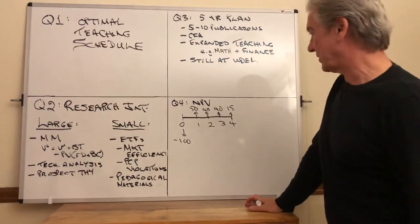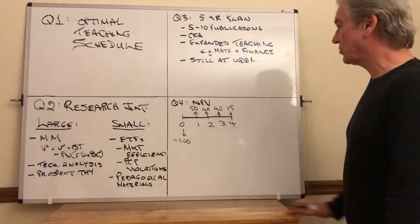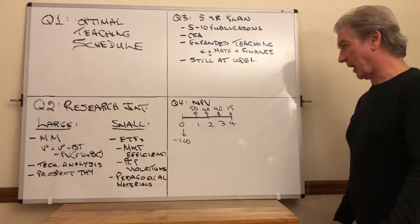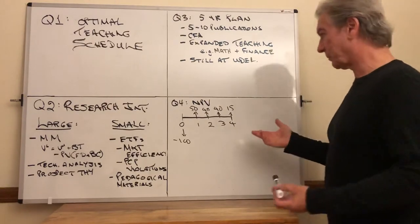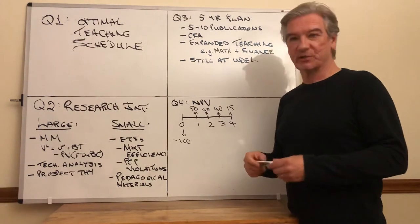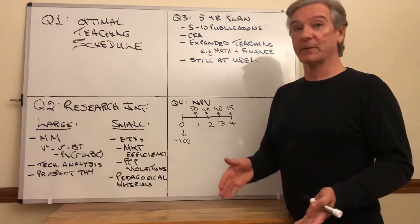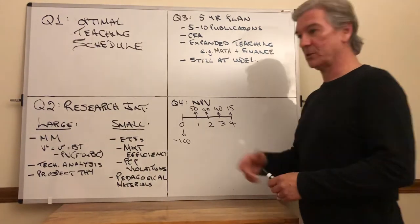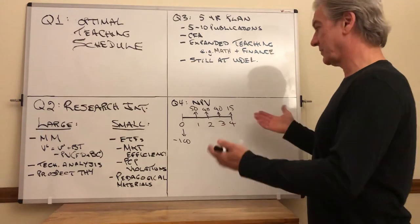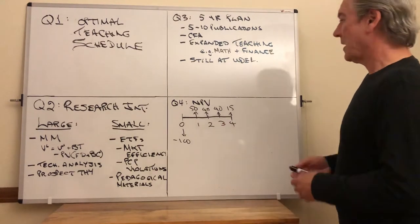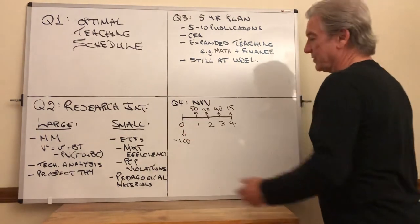Now the last question, question four: NPV. How would I explain that to an undergrad? It's a typical problem that you have presented in principles of finance. It goes well beyond that, as you know. You could use this in an investments class or just about anything in finance. Now what I've written here is just a simple problem.